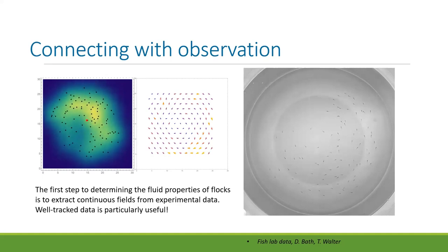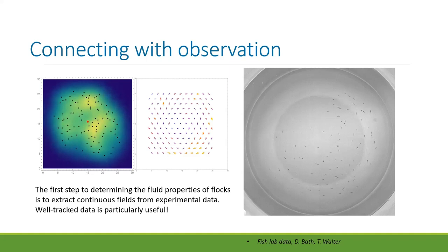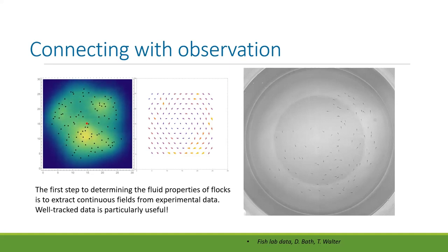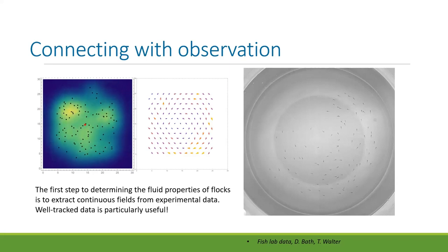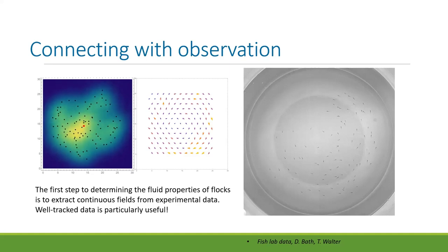Field data is great because you get huge numbers of animals like the locusts in their natural environment, telling you much more about the natural biology of what's going on, but it's not clean — it's difficult to track. Lab data is clean and controllable but harder to get at scale. Thank you.